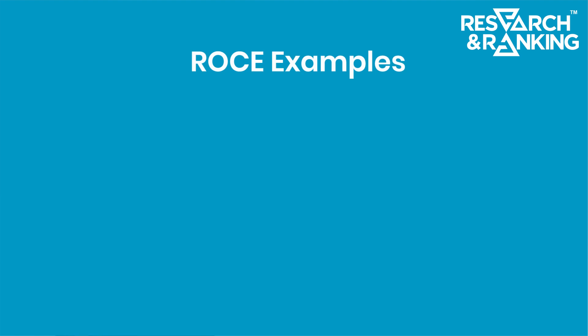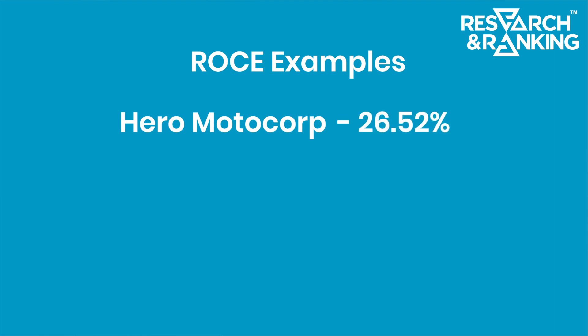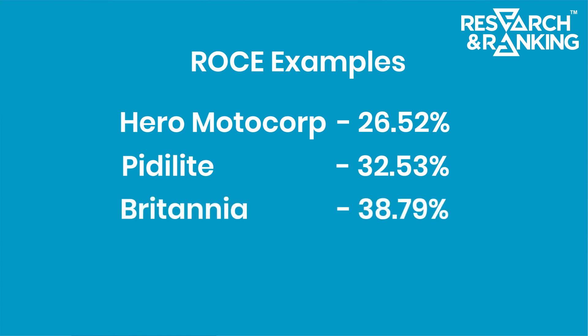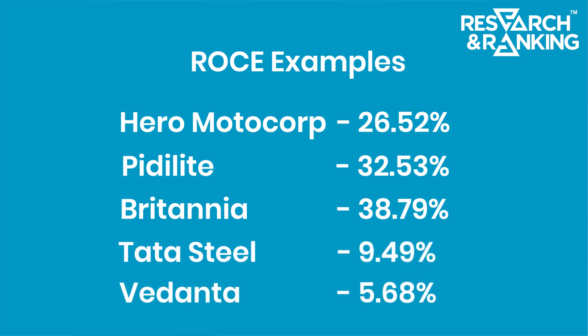Looking at some examples: Hero Motocorp has a ROCE of 26.52%, Pidilite has 32.53%, Britannia has 38.79%, Tata Steel has a ROCE of 9.49%, and Vedanta has 5.68%. This doesn't mean Tata Steel or Vedanta are bad businesses — it's just that these companies are more capital intensive, requiring high debt levels to run the business, hence their ROCE is lower.